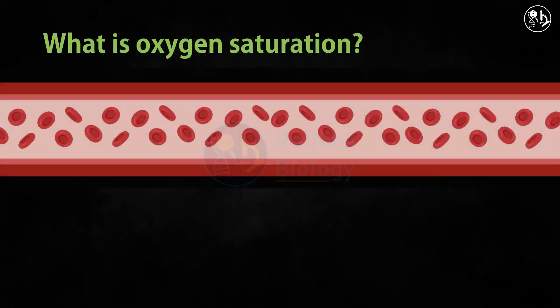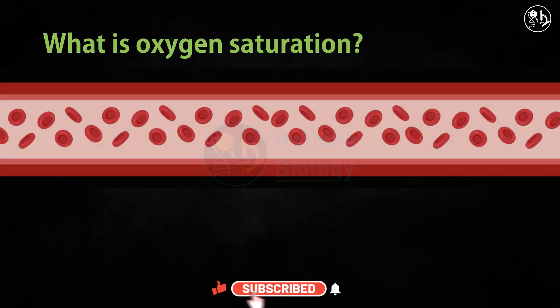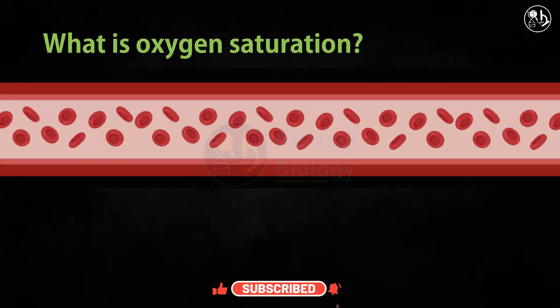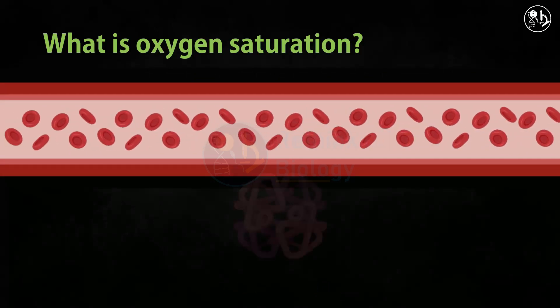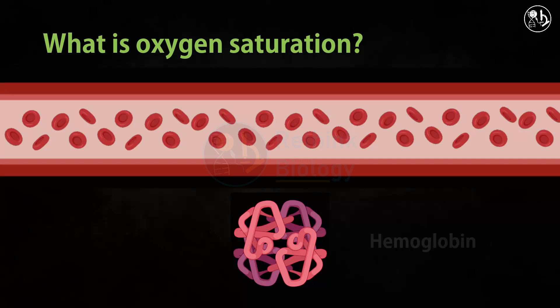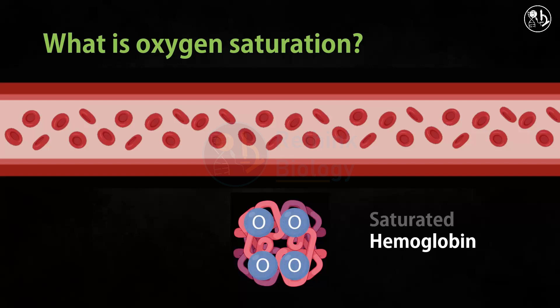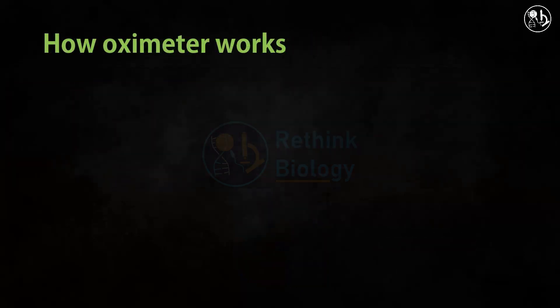Let's understand what is oxygen saturation. Our arteries carry oxygenated blood. It is actually the hemoglobin, a protein that resides inside the red blood cell, which carries oxygen. Each hemoglobin molecule can hold four oxygen molecules and is called saturated in this condition.